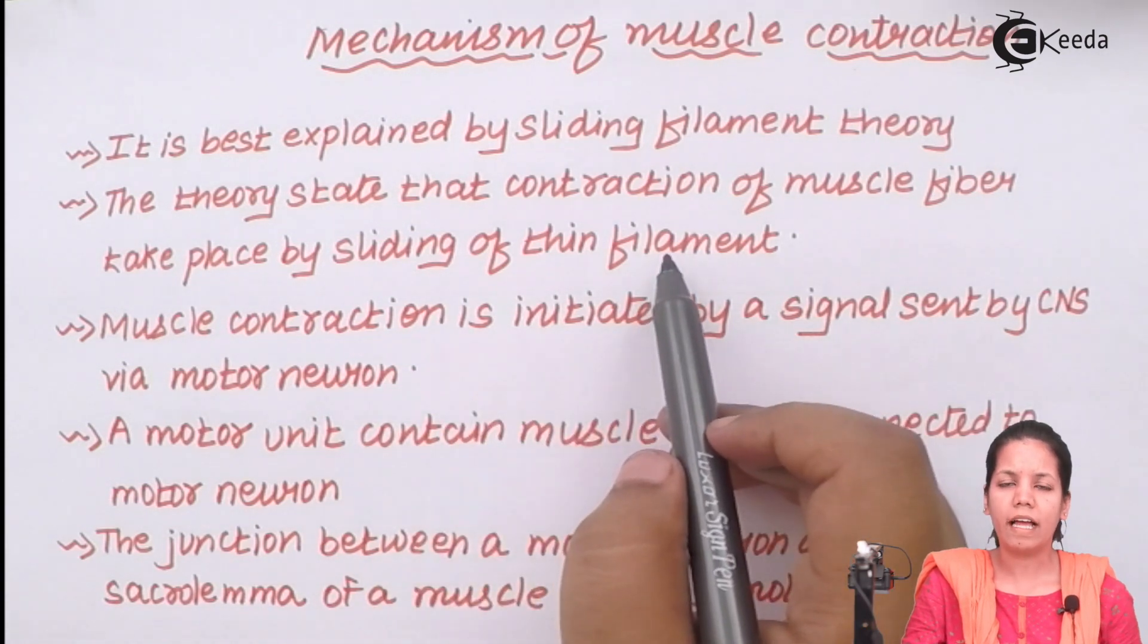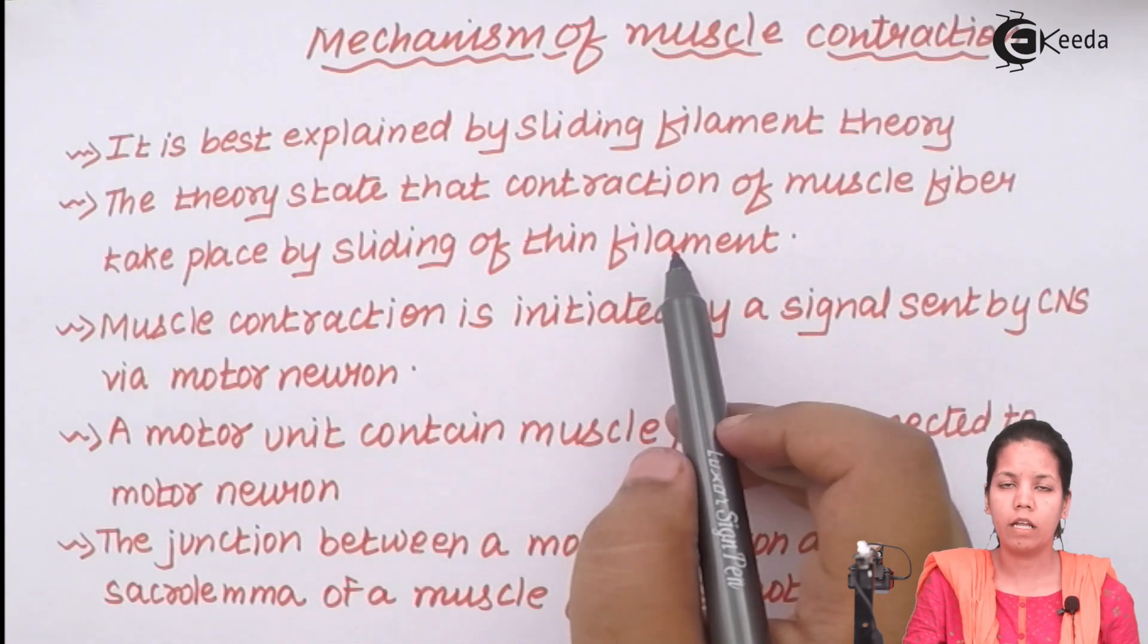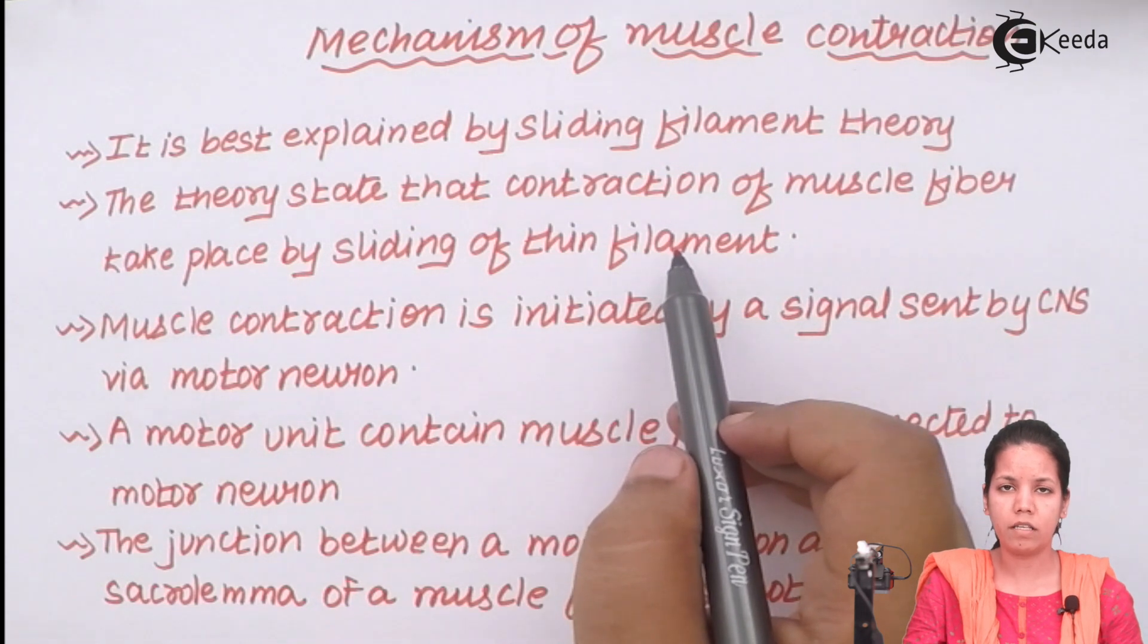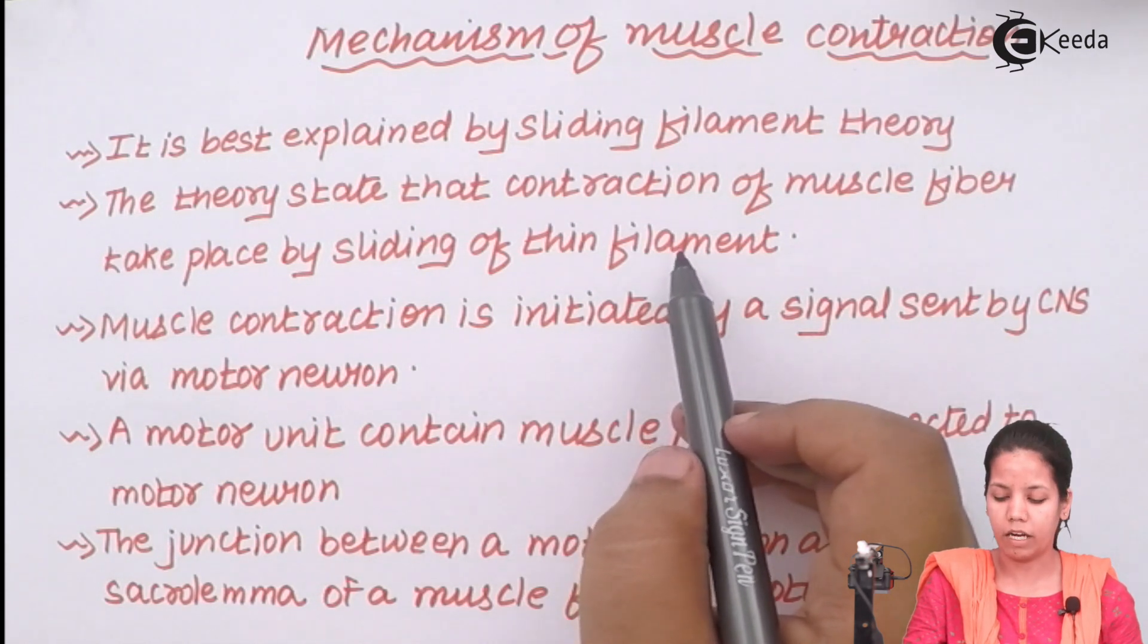Now remember we have studied that actin and myosin were the two proteins that were present during muscle contraction, and these two proteins were always present as thick and thin filaments or alternate dark and light bands. So their contraction and relaxation is very important during muscle contraction.